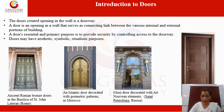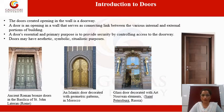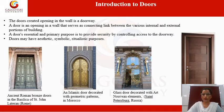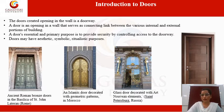Doors may also have aesthetic, symbolic, and ritualistic purposes. The first example shown is the ancient Roman bronze doors in the Basilica of St. John Lateran, Rome. The second example is an Islamic door decorated with geometric patterns in Morocco. The third example is an Art Nouveau glass door showing decorated elements in St. Petersburg, Russia.